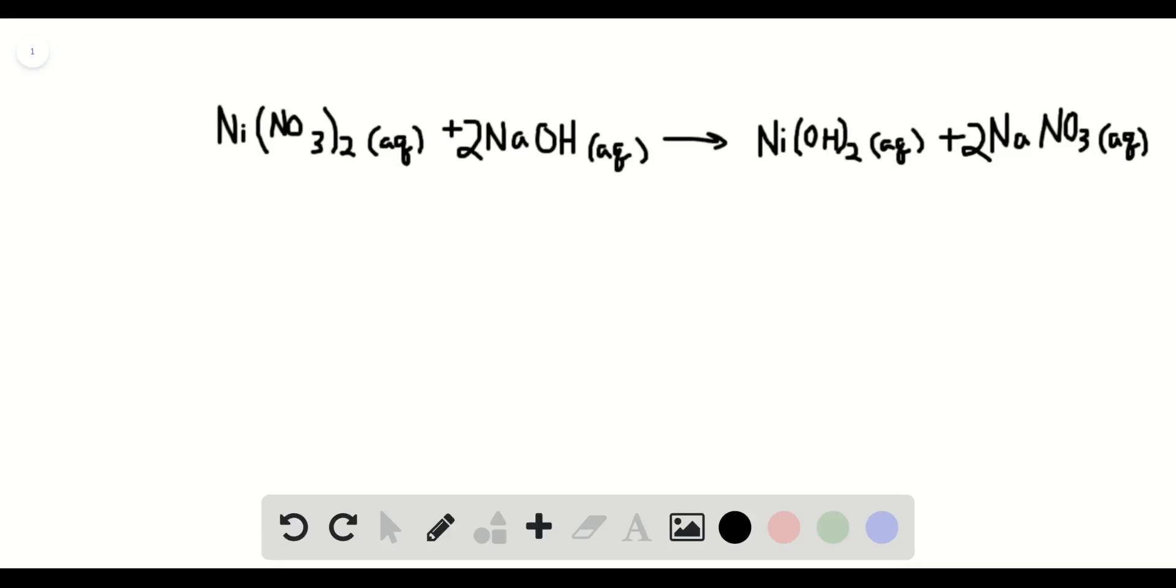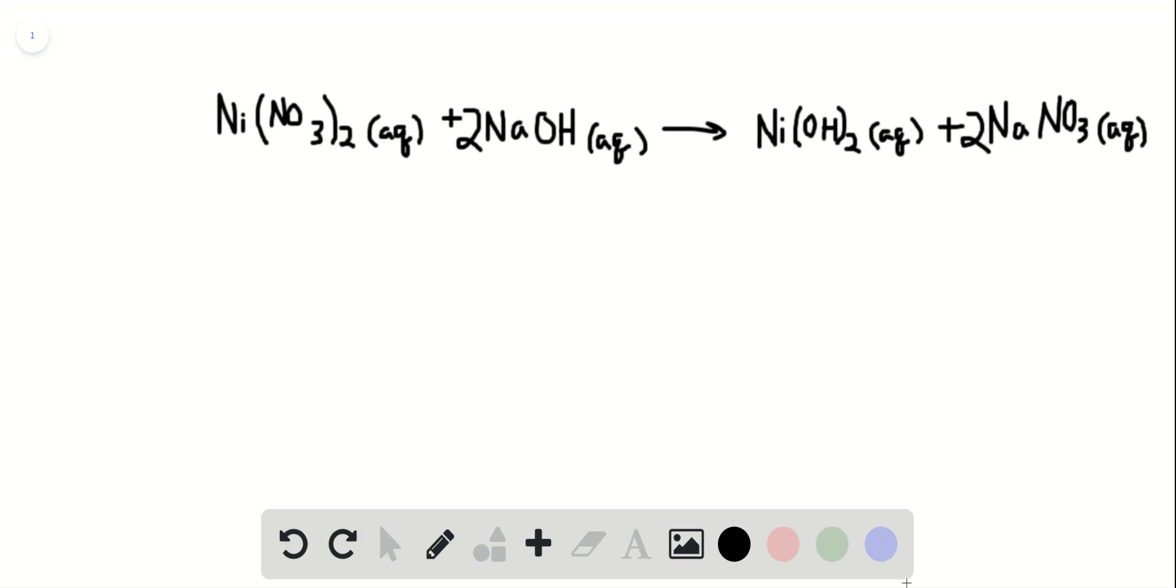This question asks us what volume of 0.1 molar NaOH is required to precipitate all of the nickel-2 ions from 150 milliliters of a 0.249 molar solution of nickel-2 nitrate. So here's the balanced equation here.